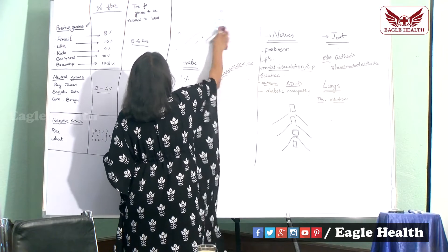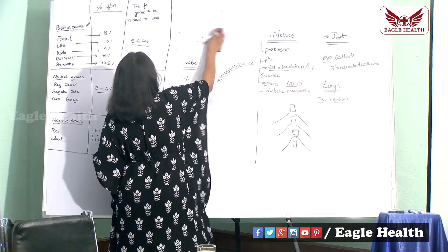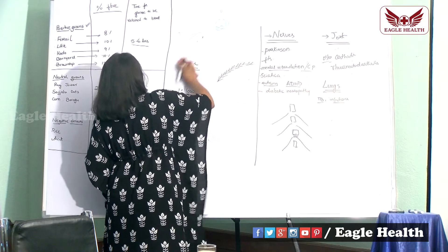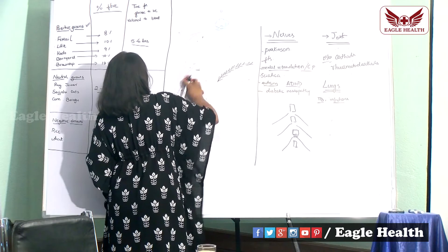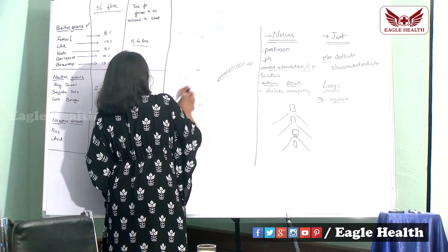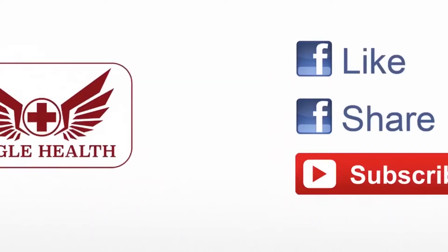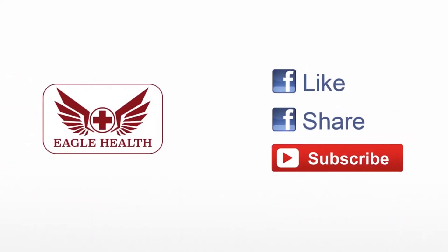All joint related complaints, all nerve related complaints, and lung related complaints ki korralu chala manchidhi. 8% fiber untaundi, yellow color lo untaundi. Like and subscribe Eagle Health and Beauty.